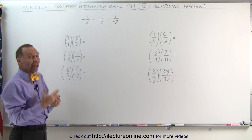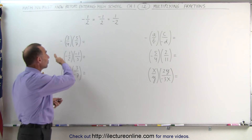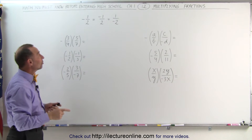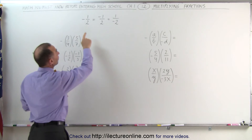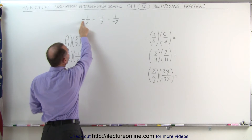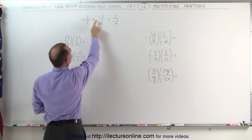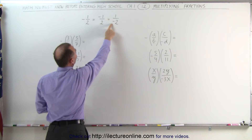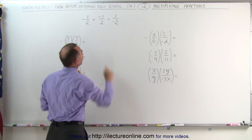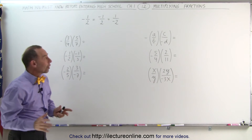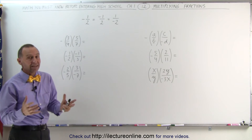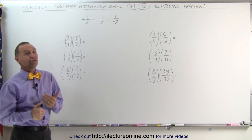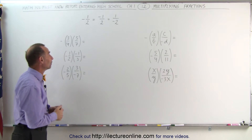Secondly, if there are signs involved, like negative signs, we have to take care of the negative signs as well. Notice that when you write a fraction, you could put the negative sign in front of the fraction, or in front of the numerator, or in front of the denominator — and all three are exactly the same. They have the exact same meaning; there's no difference whatsoever.